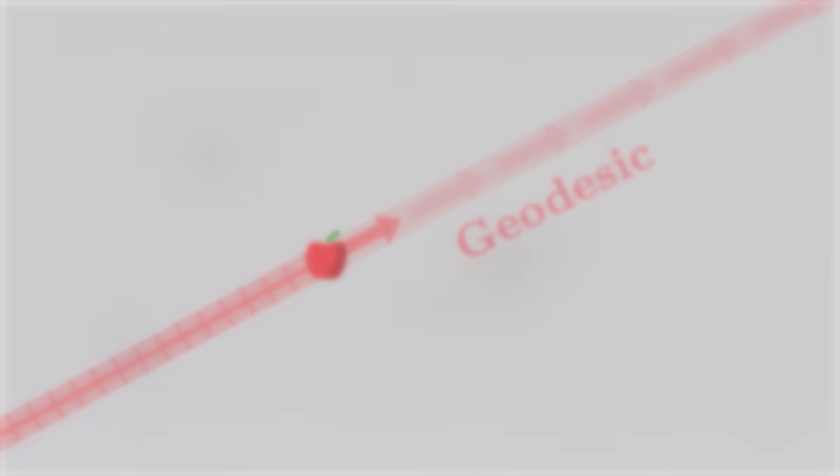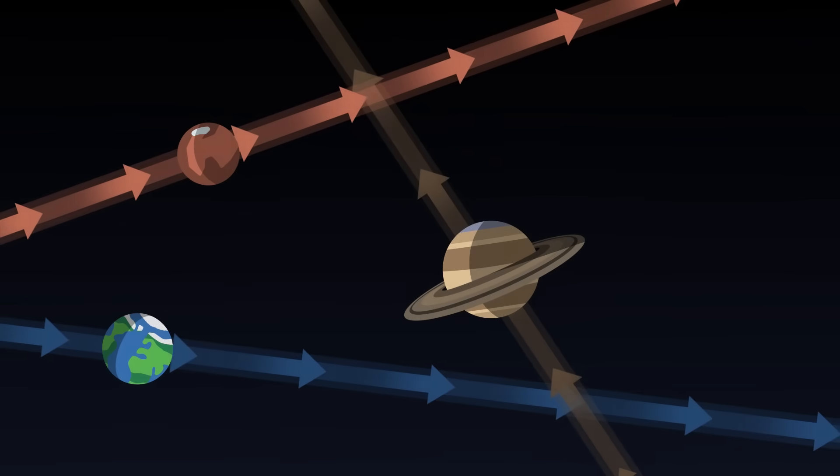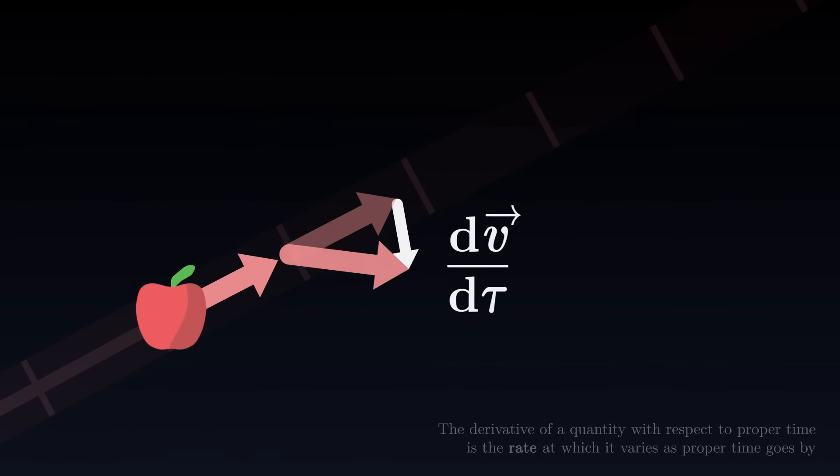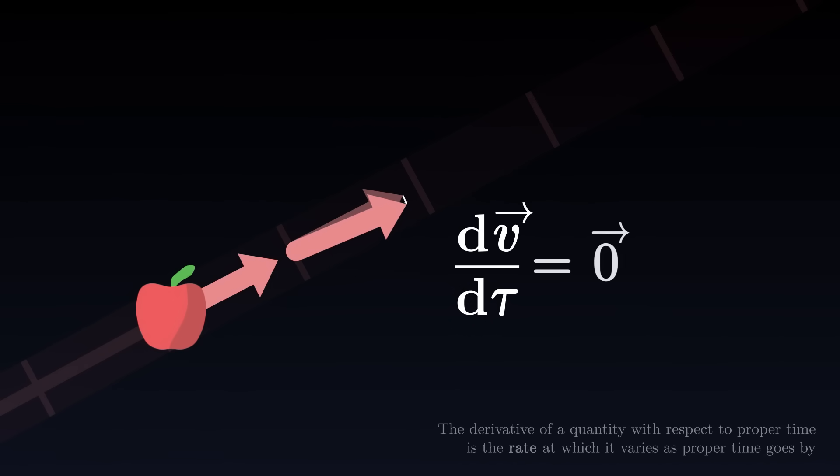In the universe, all objects tend to follow geodesics. On a geodesic, the vector does not turn. We can thus write that its derivative with respect to proper time is zero.